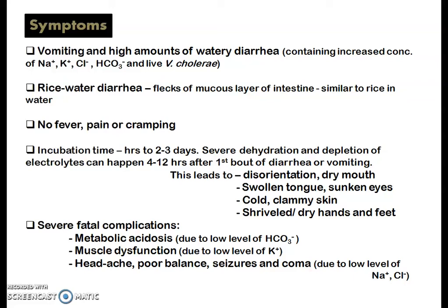Another fatal complication is muscle dysfunction due to low potassium ion levels. Headache, poor balance, seizures, and coma can also occur due to low levels of sodium, chloride, and bicarbonate ions, all of which are lost through the stool. These severe complications — metabolic acidosis, muscle dysfunction, headache, poor balance, seizures, and coma — may result from loss of these ions.